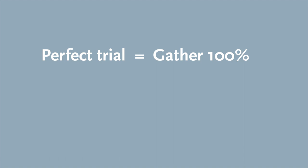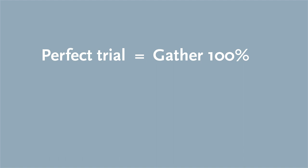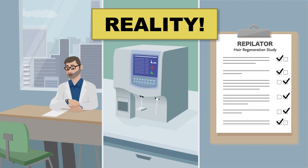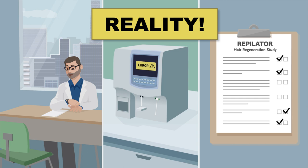In a perfect trial, you would gather a hundred percent of the data you set out to collect. Participants would attend every study visit. Lab samples would always be processed correctly. Questionnaires would be completed in full and so on. Reality is messier. Participants move away or skip some visits. Instruments malfunction. Questions are left blank. Hey, stuff happens. The result? Incomplete or missing data.